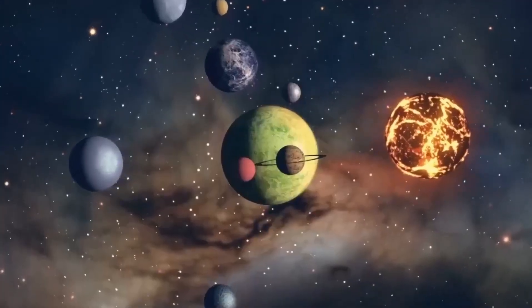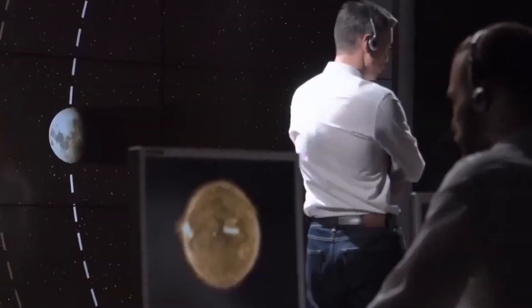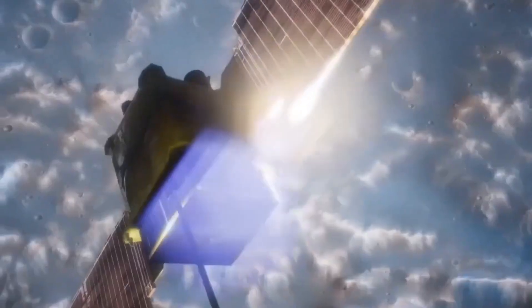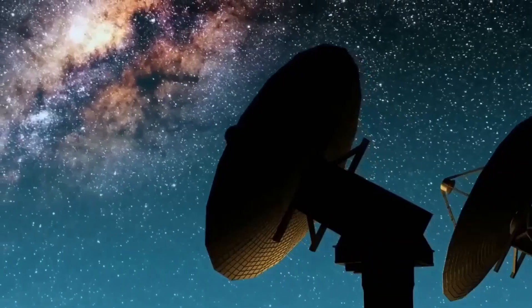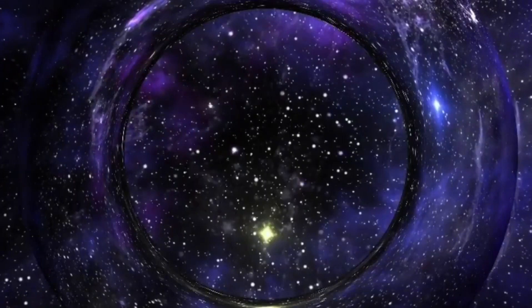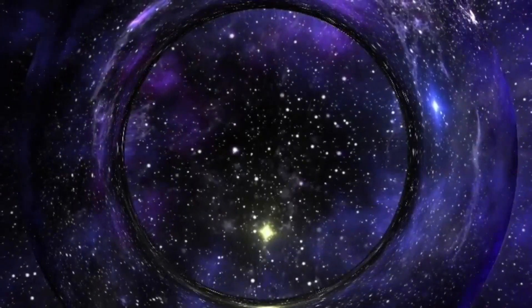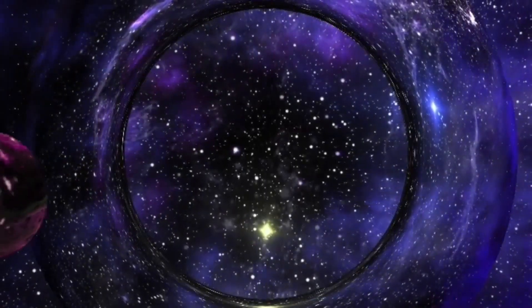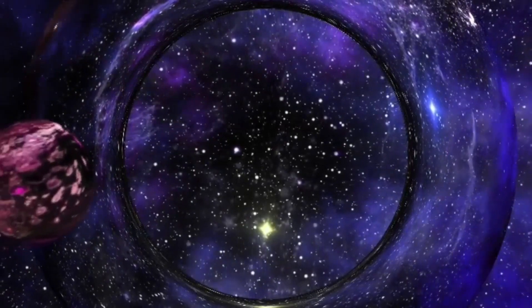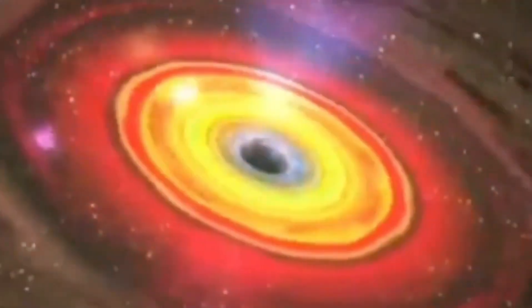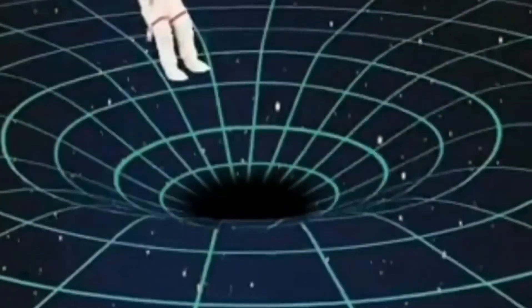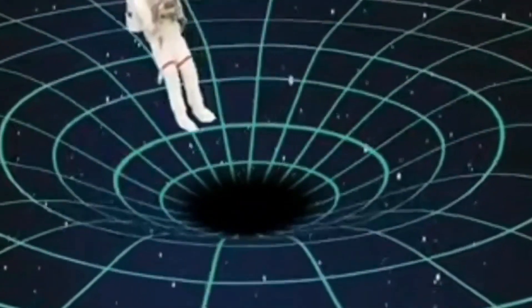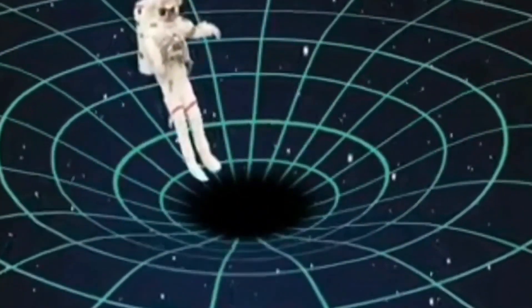The intriguing world of black holes remained largely unknown until the 20th century. In 1916, Karl Schwarzschild, a German physicist, used Albert Einstein's general theory of relativity to reveal that any mass could become a black hole if it were compressed sufficiently. However, it wasn't until 1971 that this theory transformed into tangible reality. Astronomers exploring the Cygnus constellation made a groundbreaking discovery, identifying the first-ever black hole.